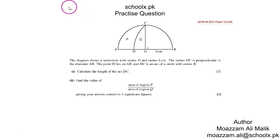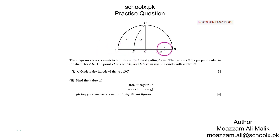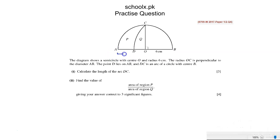In this question, the diagram shows a semicircle center O and radius 6 centimeters. Points A, O, B, C are labeled. OB is 6 centimeters and AO is also 6 centimeters. The radius OC is perpendicular to the diameter AB.